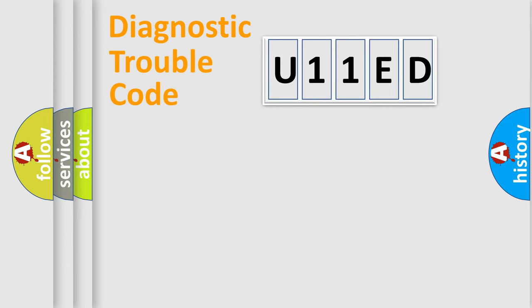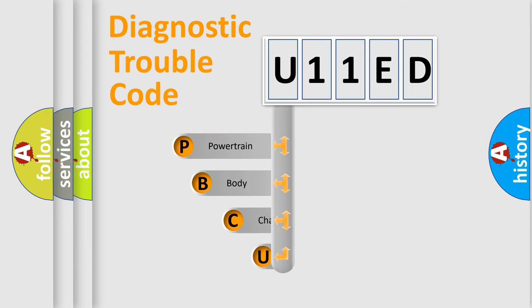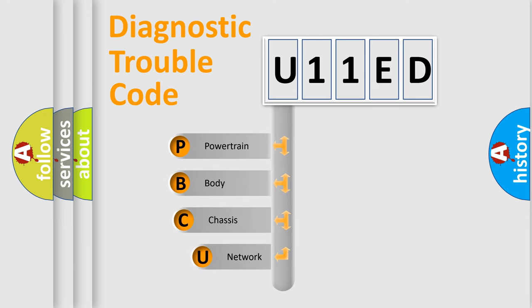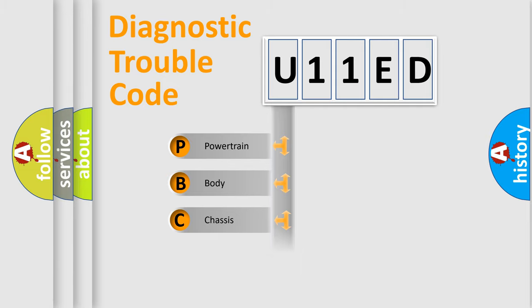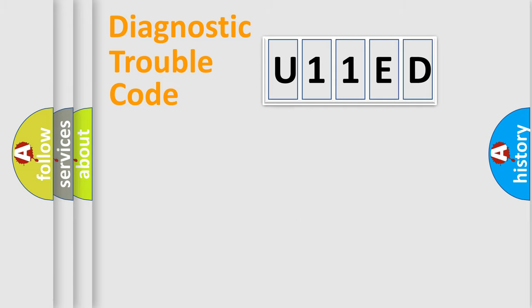Let's look at the history of diagnostic fault code composition according to the OBD-II protocol, which is unified for all automakers since 2000. We divide the electric system of an automobile into four basic units: Powertrain, Body, Chassis, and Network.